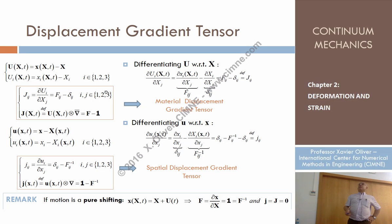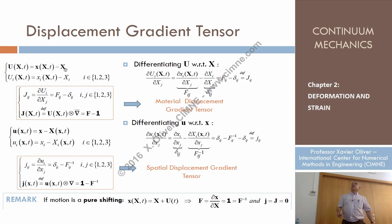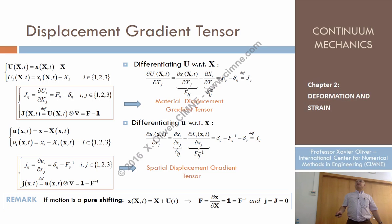By differentiating with respect to J, we recover something which is the derivative of small x_i with respect to capital X_J. That is what we defined as the component IJ of tensor F, the deformation gradient tensor. And the derivative of capital X_I with respect to capital X_J is zero if I is different from J, and one if I equals J — this is the Kronecker delta.